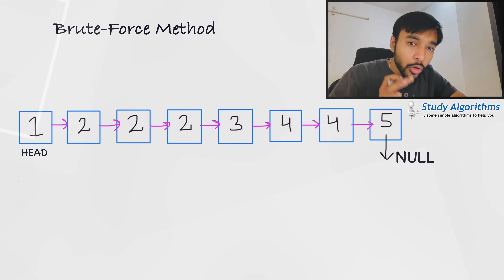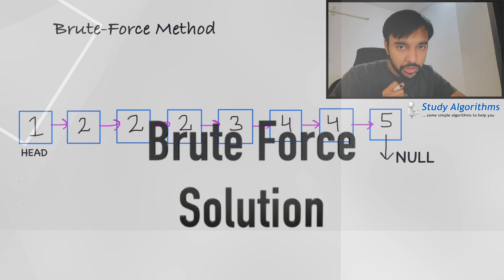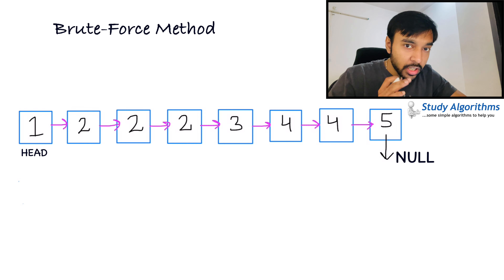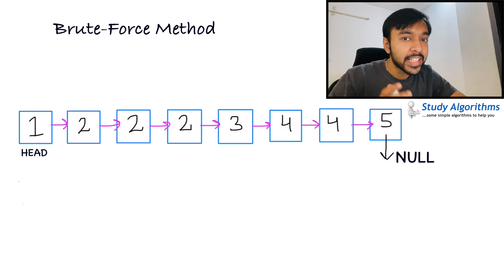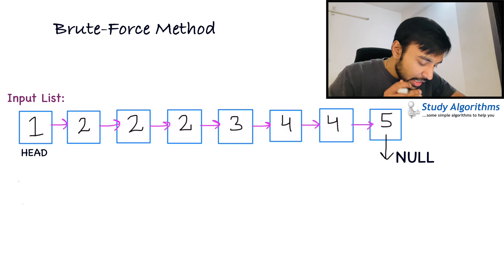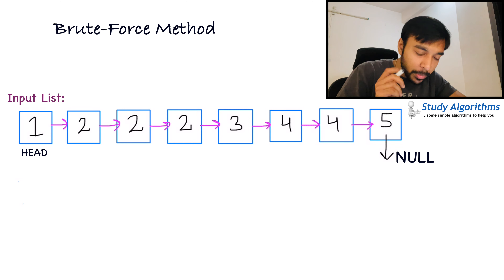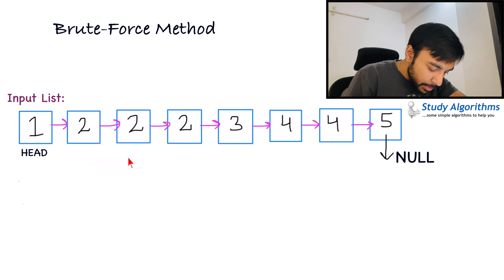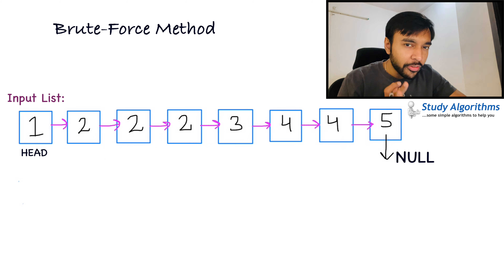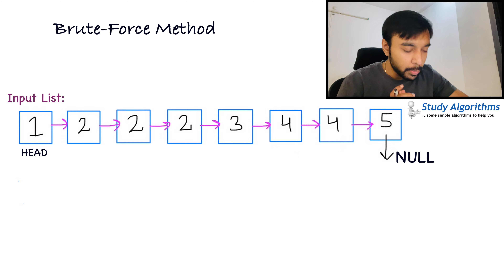A good developer always tries to come up with a brute force solution first. That is because a brute force solution can guarantee you if a solution to a problem even exists. So let us say you are given this sample linked list and you have to remove duplicates from it. You can see that the element 2 is duplicated and the element 4 is duplicated. You need to find a way that in your output list you do not have any duplicates.